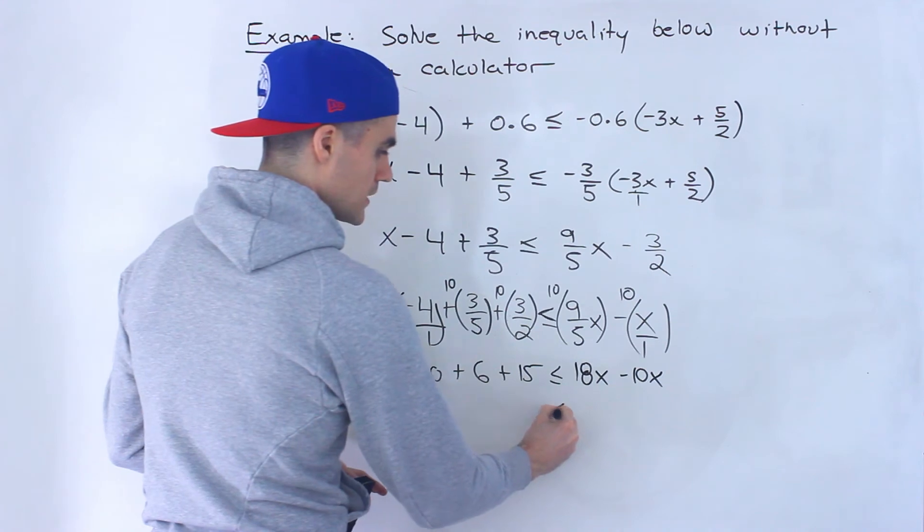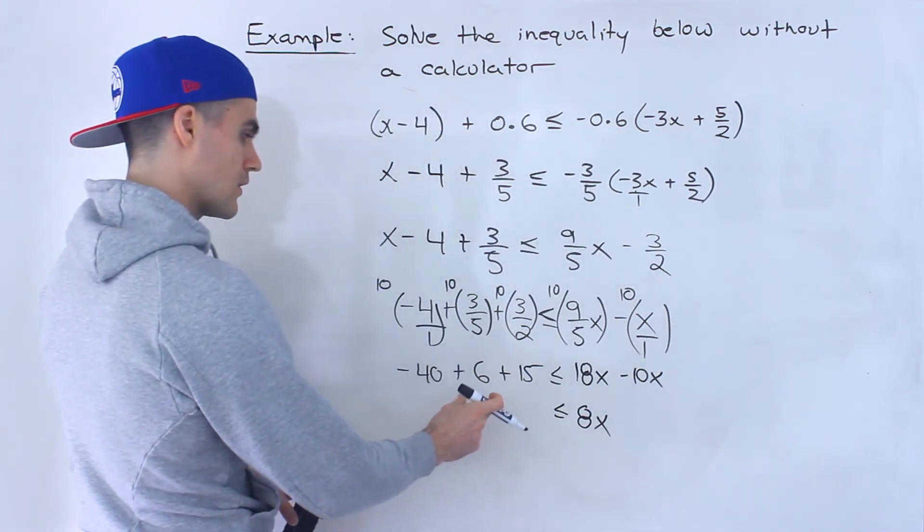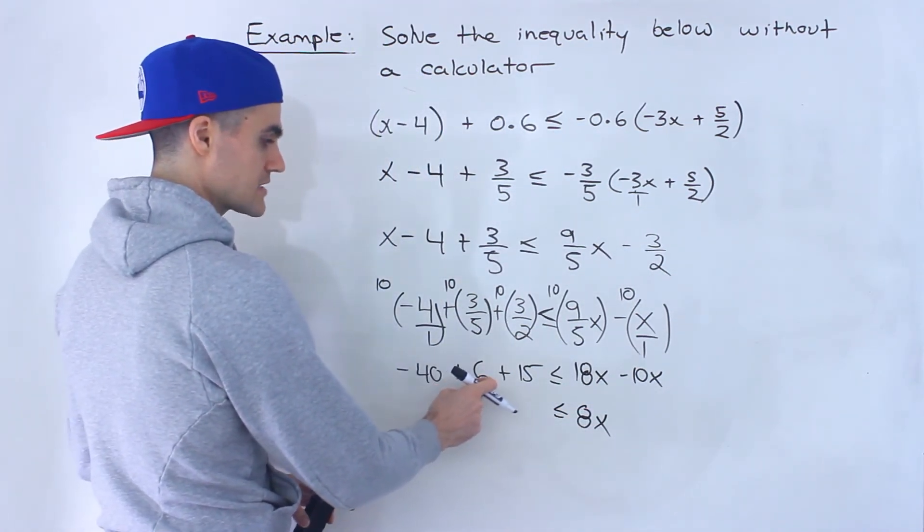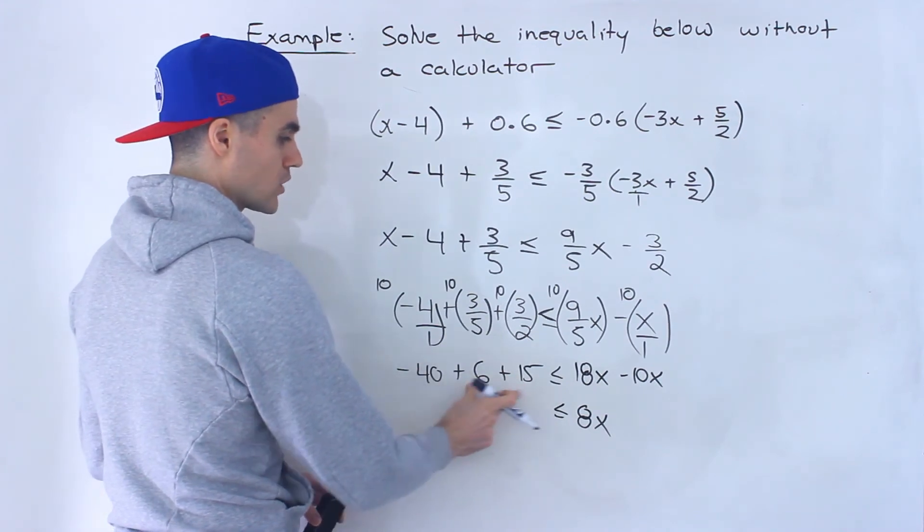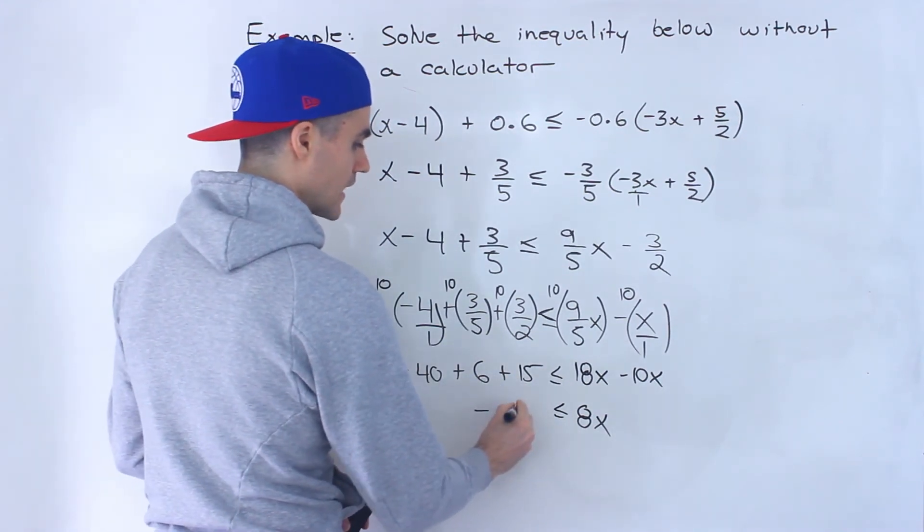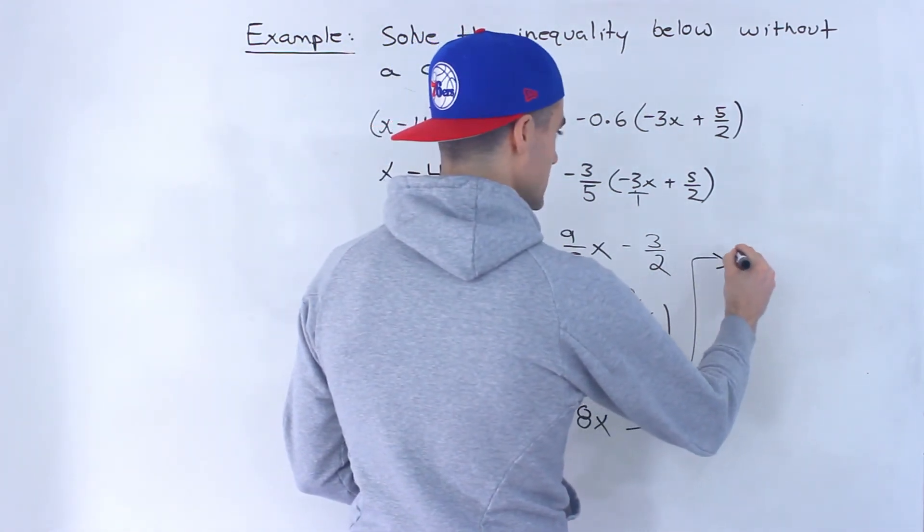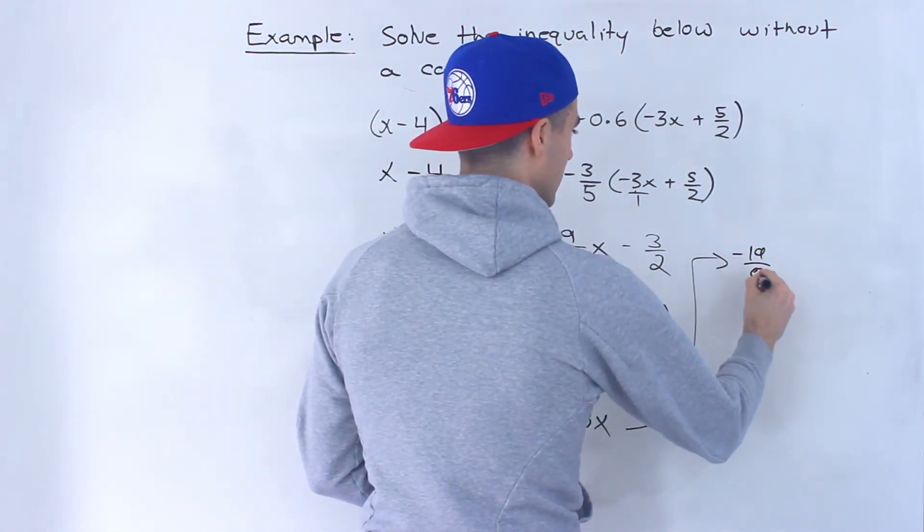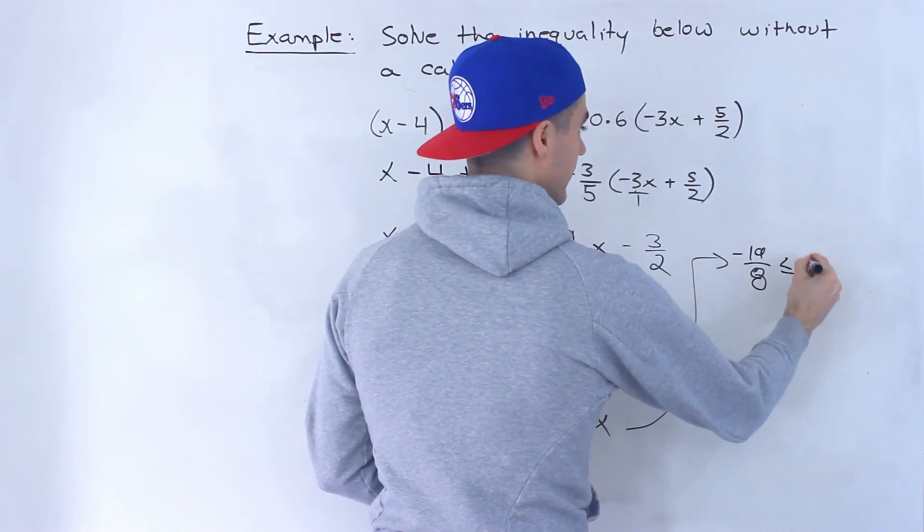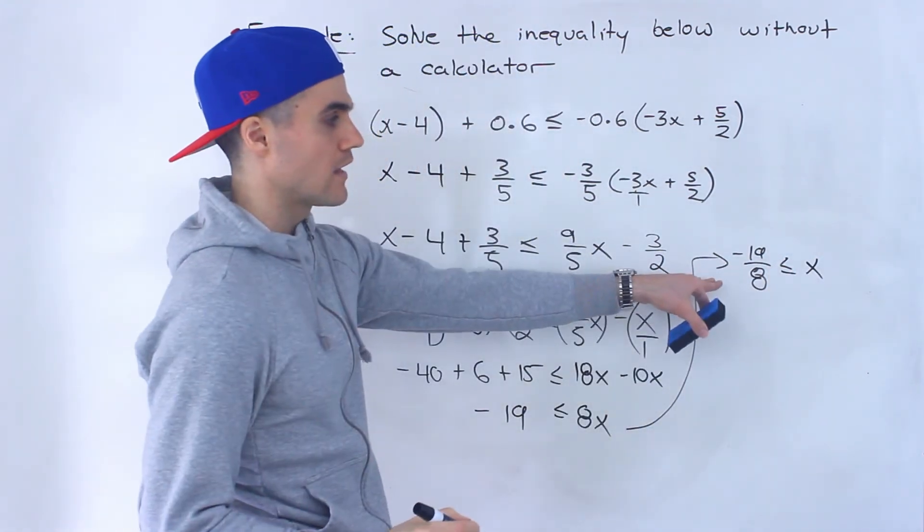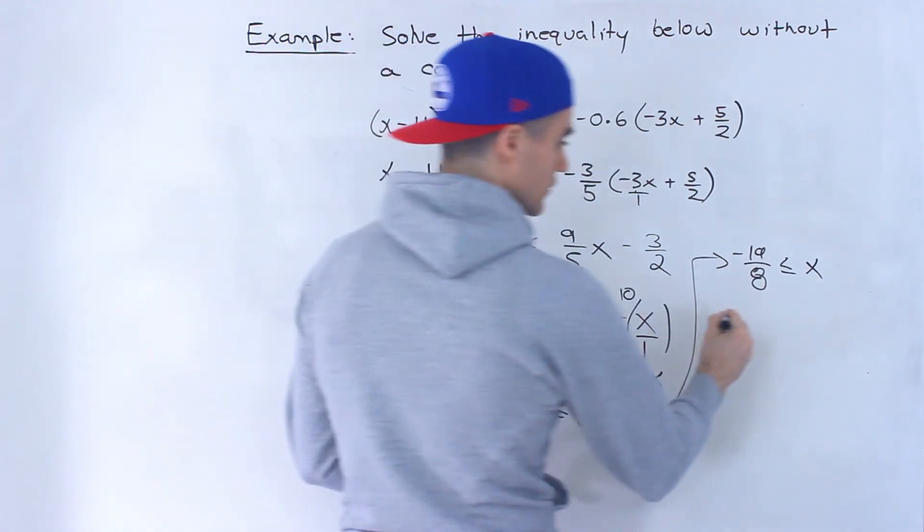So notice we would get 8x on this side. And then over here we would have negative 40 plus 6 plus 15. So that's negative 40 plus 21, which would give us negative 19. Divide both sides by 8. So notice that x has to be greater than or equal to negative 19 over 8.